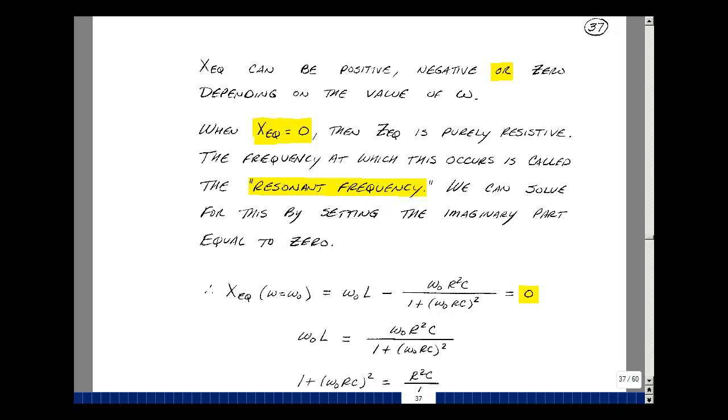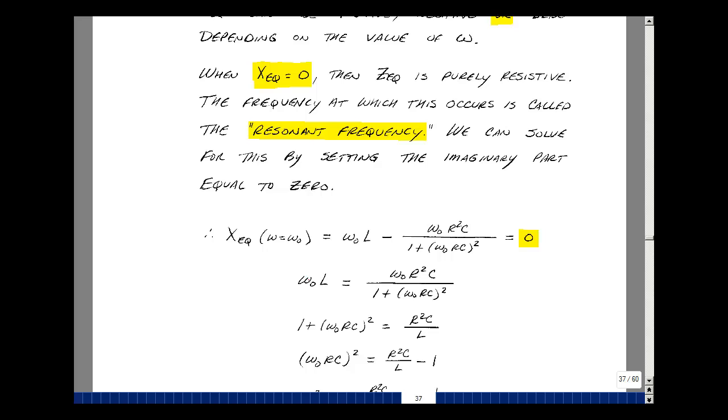Let's take that imaginary part and set it equal to zero. Now this occurs at usually only one frequency, so we'll call that equal to ω₀. I'm going to plug in ω equals ω₀ into that term for the imaginary part. So here's where ω was, and I'm going to replace that by ω₀.